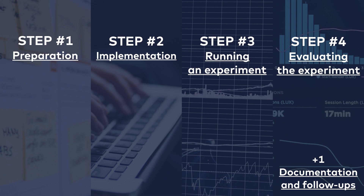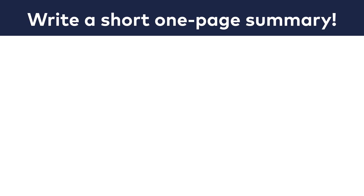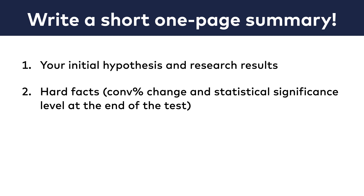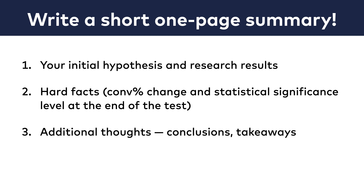Let's talk about documentation first. Whether your A-B test is a winning or a losing one, you should always write a short, one-page summary about it. This one-pager can contain your initial hypothesis and research results. You can add the hard facts to it, like the conversion change and statistical significance level that you have seen at the evaluation step, and also a few additional thoughts about your conclusions and takeaways from the experiment.